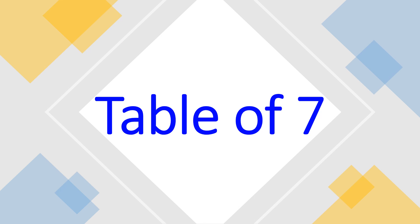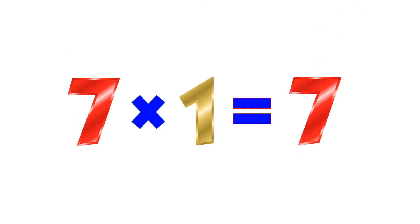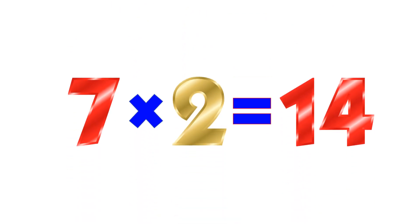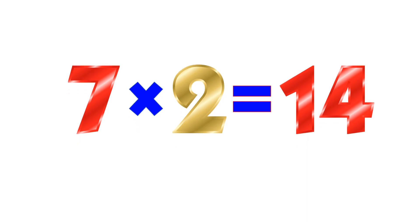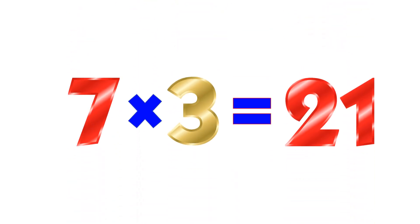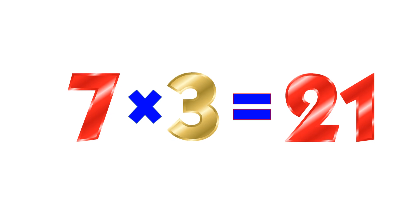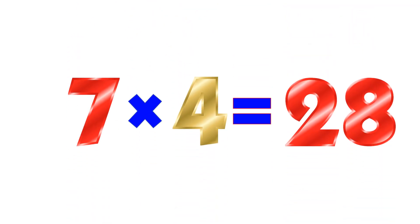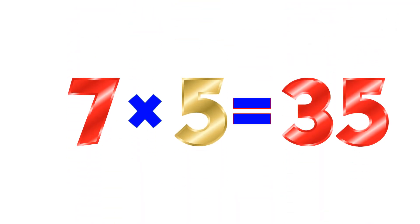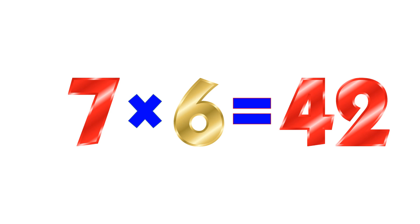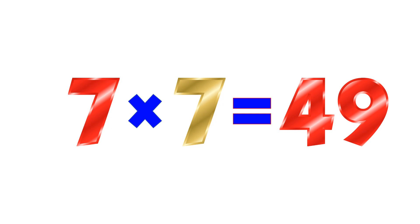Table of 7. 7×1=7. 7×2=14. 7×3=21. 7×4=28. 7×5=35. 7×6=42. 7×7=49.